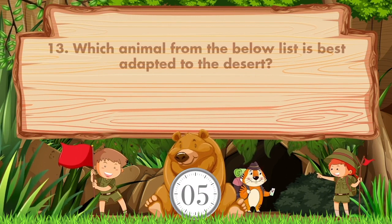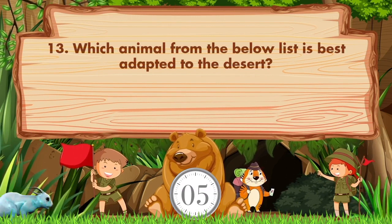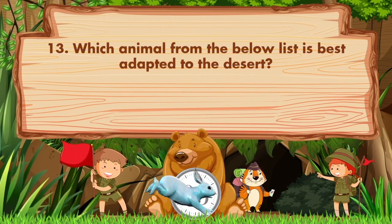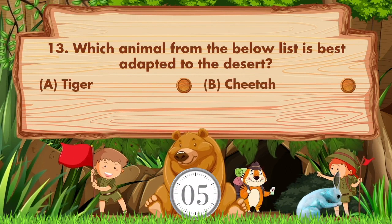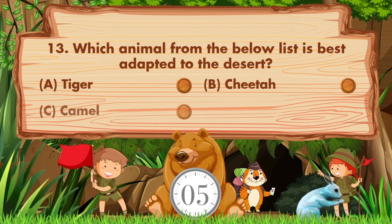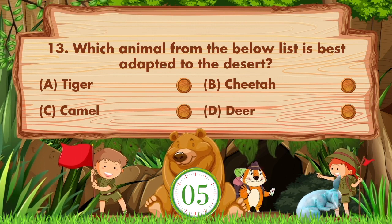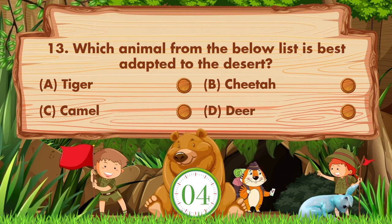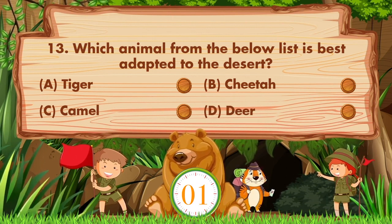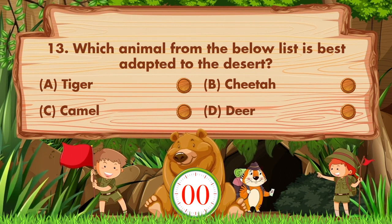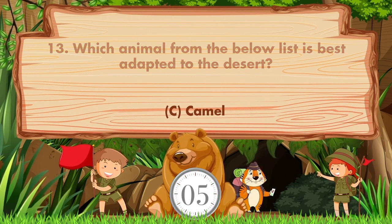Which animal from the list below is best adapted to the desert? Option A: tiger, B: cheetah, C: camel, D: deer. Answer is option C, camel.